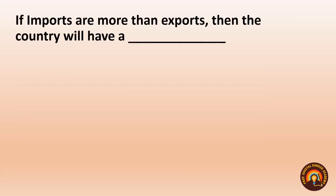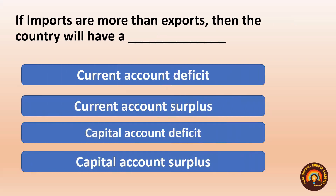Next: If imports are more than exports, the country will have — Options: Current account deficit, Current account surplus, Capital account deficit, Capital account surplus. Imports and exports are current account items. Current account deficit occurs when imports exceed exports — we spend more foreign exchange on imports and earn less from exports. Answer: Current account deficit.